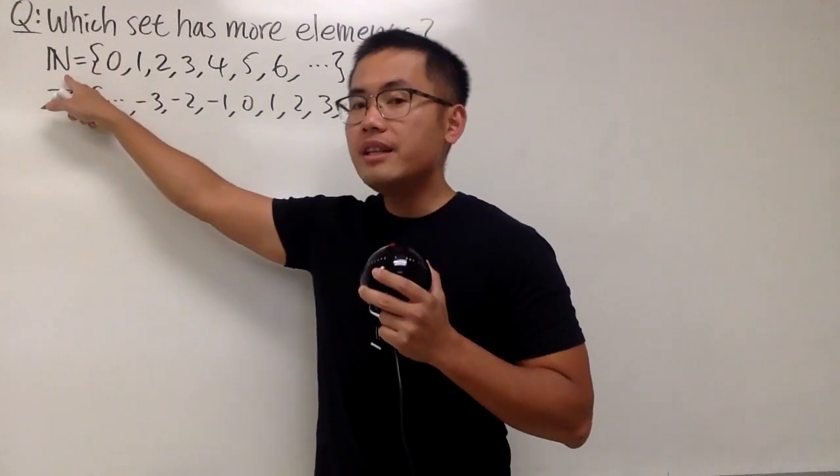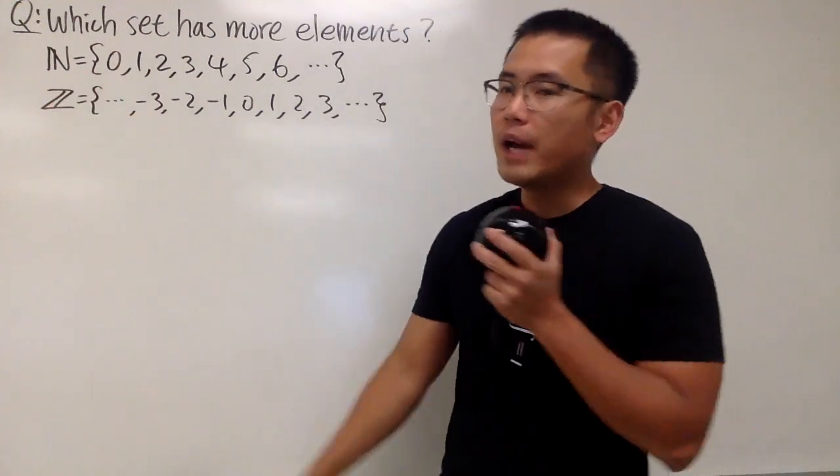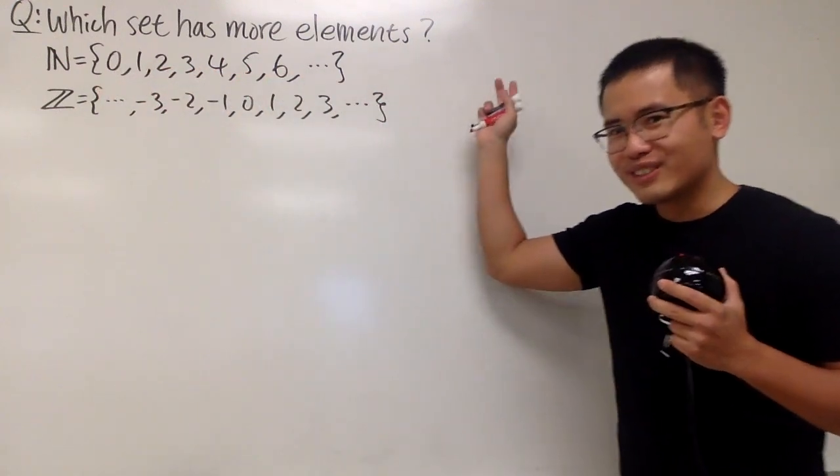The first set is N, namely the set of all the natural numbers, and we have 0, 1, 2, 3, 4, 5, 6, 7, 8, 9, and so on.